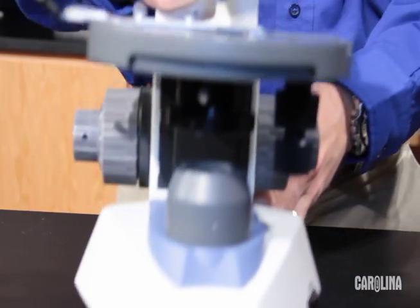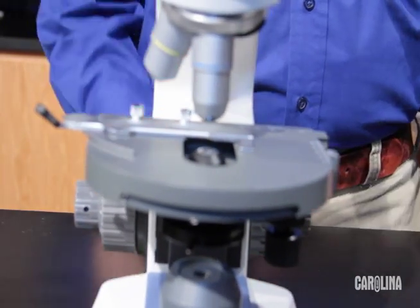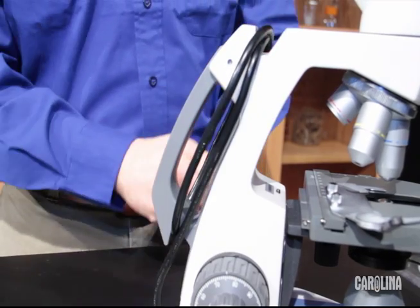To use a compound microscope first set it on a solid surface and plug it in. Make sure the excess cord is out of the way.